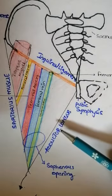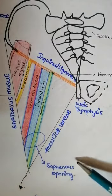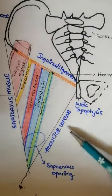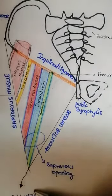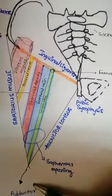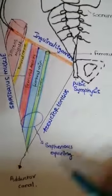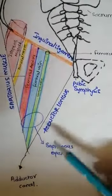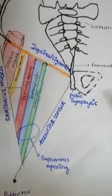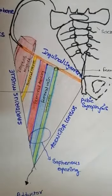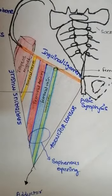At the level of the lower limb muscles, mostly at the level of the leg, this femoral triangle is continuous with the adductor canal, which is the continuation of the femoral triangle. Now coming to the contents and the boundaries of the femoral triangle.